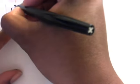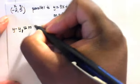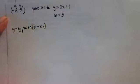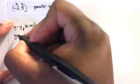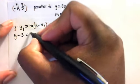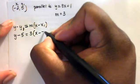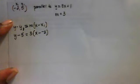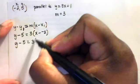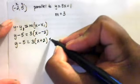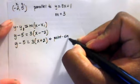We'll use the slope of 3 and the point negative 2, 5 — so x1 is negative 2 and y1 is 5. Our point-slope form is y minus y1 equals m times x minus x1. We replace the values: y minus 5 equals 3 times x minus negative 2. Since x minus negative 2 can be rewritten as x plus 2, we have y minus 5 equals 3 times (x plus 2). That equation is in point-slope form.